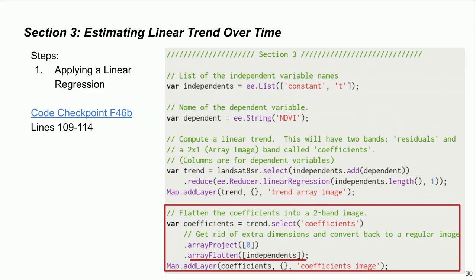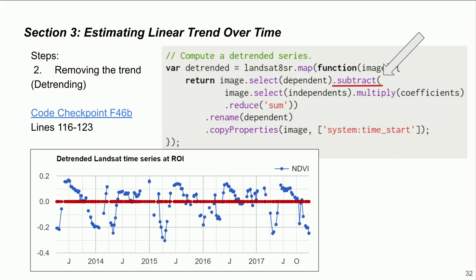We remove the trend from the time series by subtracting the second part of the linear model from the NDVI values. This showcases the power of Earth Engine: we're performing linear regression and detrending at every single pixel of the image simultaneously — highly computational. The resulting plotted time series with no trend is shown as the red line.